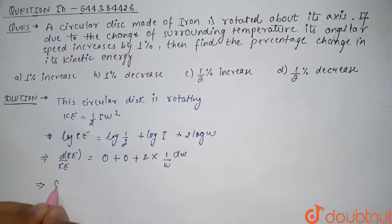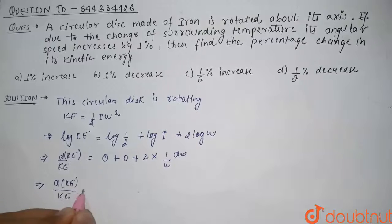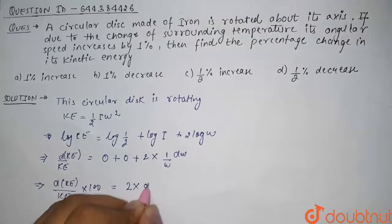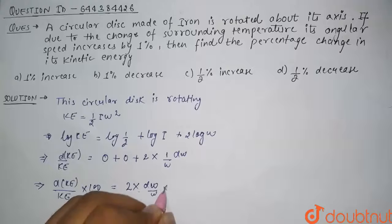So from here it comes out to be dKE by KE into 100. We will multiply it by 100, which is equal to 2 into d omega by omega into 100.